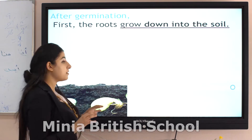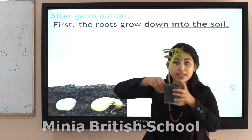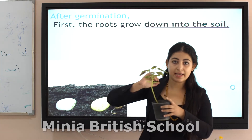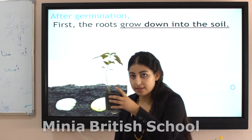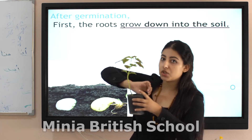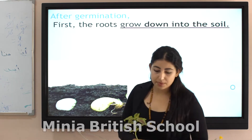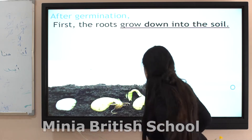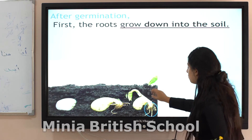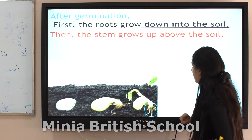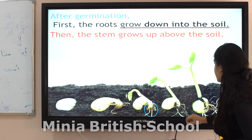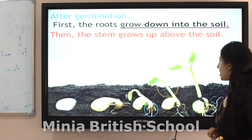After germination, first roots grow down into the soil, but the stem grows up above the soil. These are the roots — can you see? The roots grow down into the soil. Can you see? This is the stem. It grows up above the soil.